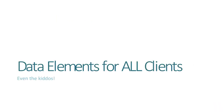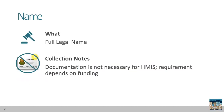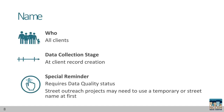The following data elements are required for all clients, even the kids. Name refers to the full legal name of the client, and HMIS does not require documentation. Some funding sources may require documentation for eligibility. HMIS data standards require a full name for all clients, and this should be collected for client record creation. A special reminder: there is a separate question which requires a data quality status for the client's name. This allows HMIS to know if a client gives a full name or only a partial name.